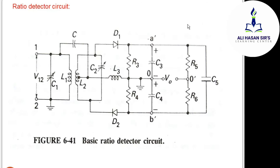The amplitude limiter block removes any unwanted rise in amplitude in the FM signal. If you use the ratio detector circuit, that amplitude limiting action is handled within the circuit itself — because of the large value capacitor C5. So the amplitude limiting action does not need to be done separately in the detector circuit.